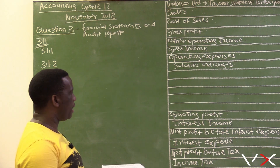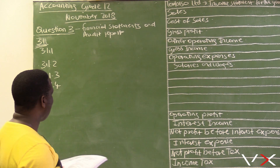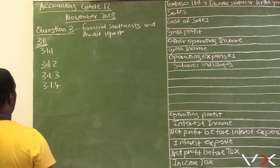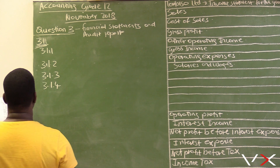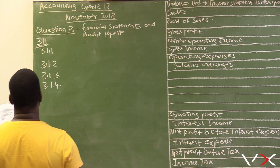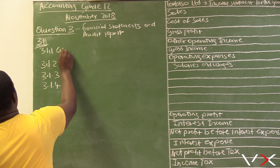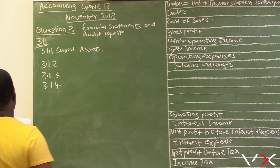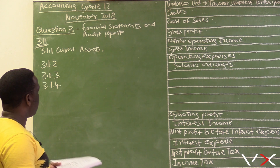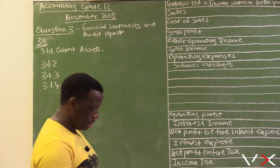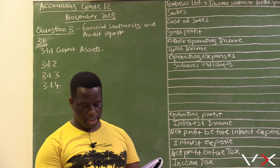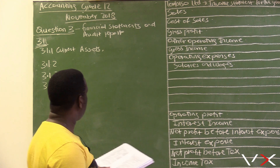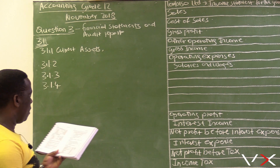For 3.1.1, trade and other receivables — we are referring to the debtors here. Trade and other receivables will be found in the balance sheet and will be recorded under current assets. So the answer for 3.1.1 is current assets.